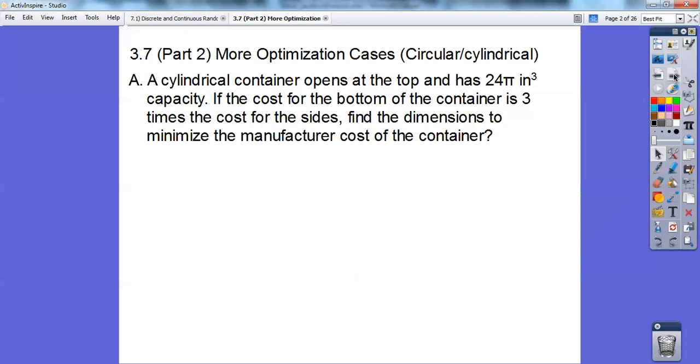A cylindrical container opens at the top and has 24π cubic inch capacity. If the cost of the bottom of the container is three times the cost of the sides, find the dimensions to minimize the manufacturer's cost of the container. Here's some formulas. Here's my cylinder right here with the radius and this is the height.